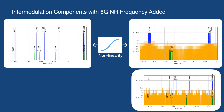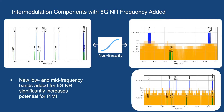Likewise, PIM interference caused by the operator's UMTS and LTE channels may also impact 5G NR channels. This PIM interference will substantially impact the uplink performance of 5G cells. Due to channel reciprocity applied for downlink channel estimation, the downlink performance of 5G cells with uplink interference will also be substantially impacted. This interference will need to be addressed in order to realize the expected benefits from new 5G NR technologies such as Massive MIMO.